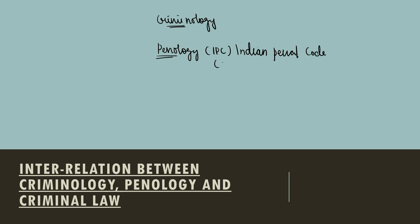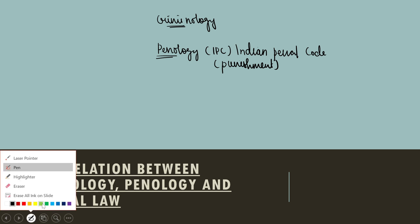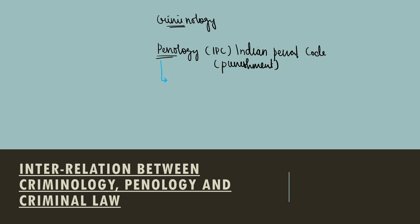We have different punishments for different crimes. We do not give the same punishment to a person who commits theft as to a person who is a murderer. According to the type of crime, we decide the punishment. So criminology helps penology and the penal code. Penology is the science of punishment — it studies punishment and related matters.